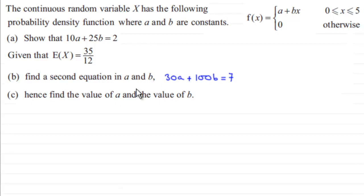Remember we've got one equation which is 10A plus 25B equals 2. And in the last part we found out that another equation in terms of A and B was 30A plus 100B equals 7.